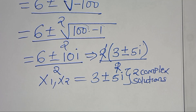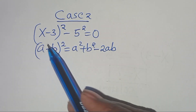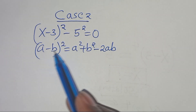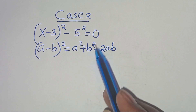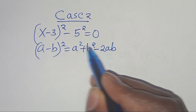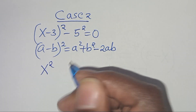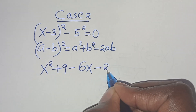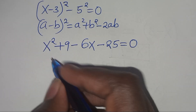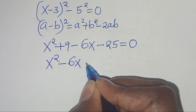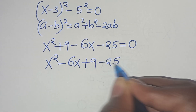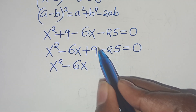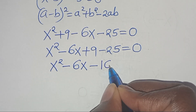Let's proceed to case 2. In case 2, we have x minus 3 to the power of 2 minus 5 squared, equal to 0. Expanding x minus 3 squared using the same algebraic identity, we get x squared plus 9 minus 6x, then minus 25, equal to 0. Combining: x squared minus 6x minus 16, equal to 0.